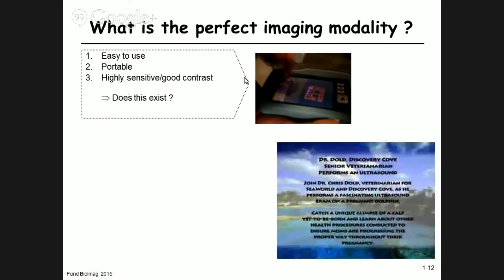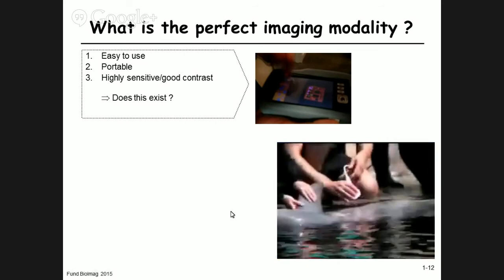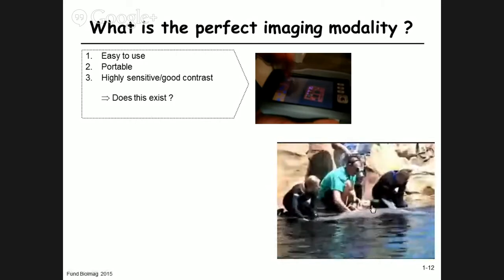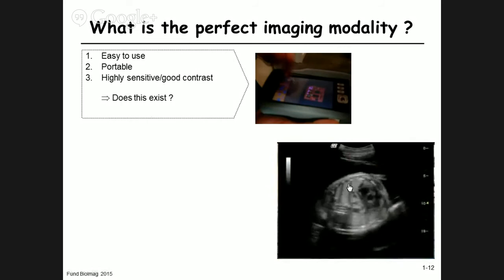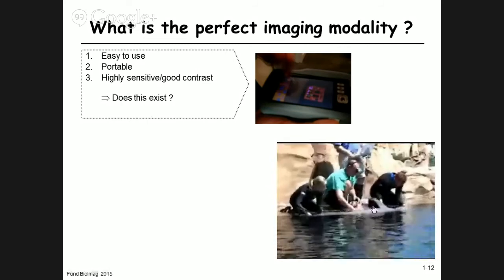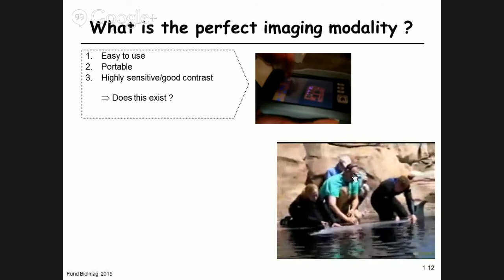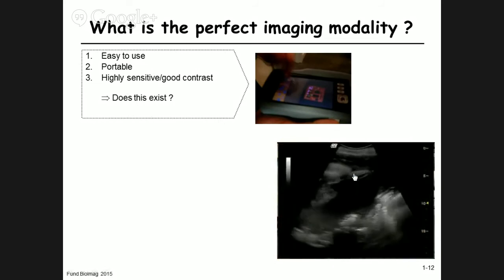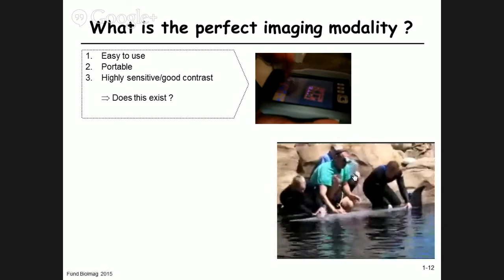The closest real-world example comes from an aquarium in Florida, where veterinarians take ultrasound images of a pregnant dolphin while it's still in the water. The veterinarian wears camera glasses showing the ultrasound scan in real time, allowing assessment of the fetus's development in its natural environment. We'll discuss the streaking artifacts visible in those images. This is close to the ideal: sufficiently precise, fairly cheap, and non-invasive enough to scan the dolphin in situ.